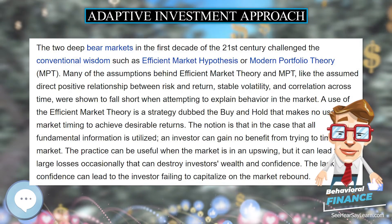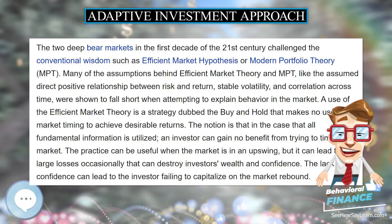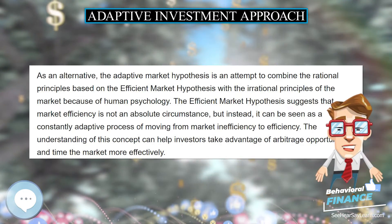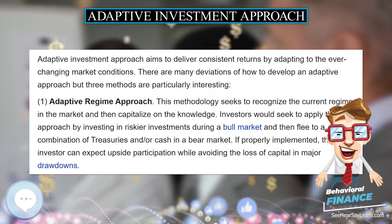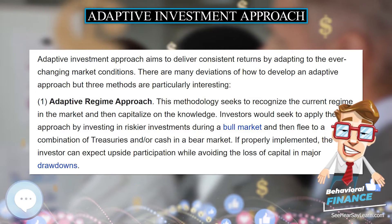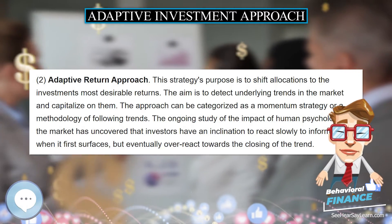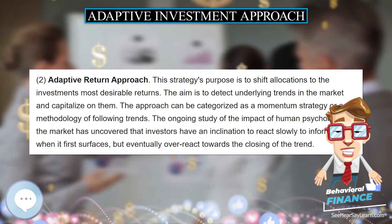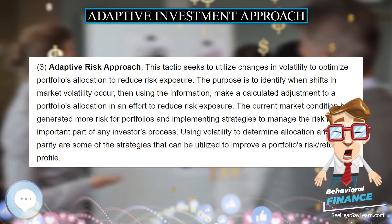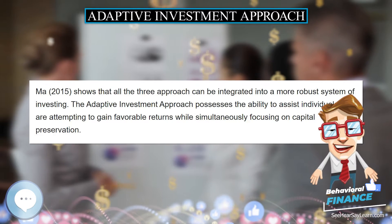A use of the efficient market theory is a strategy dubbed the buy-and-hold, which makes no use of market timing to achieve desirable returns. The notion is that if all fundamental information is utilized, an investor can gain no benefit from trying to time the market. The practice can be useful when the market is in an upswing, but it can lead to large losses that can destroy investors' wealth and confidence, causing them to fail to capitalize on the market rebound.